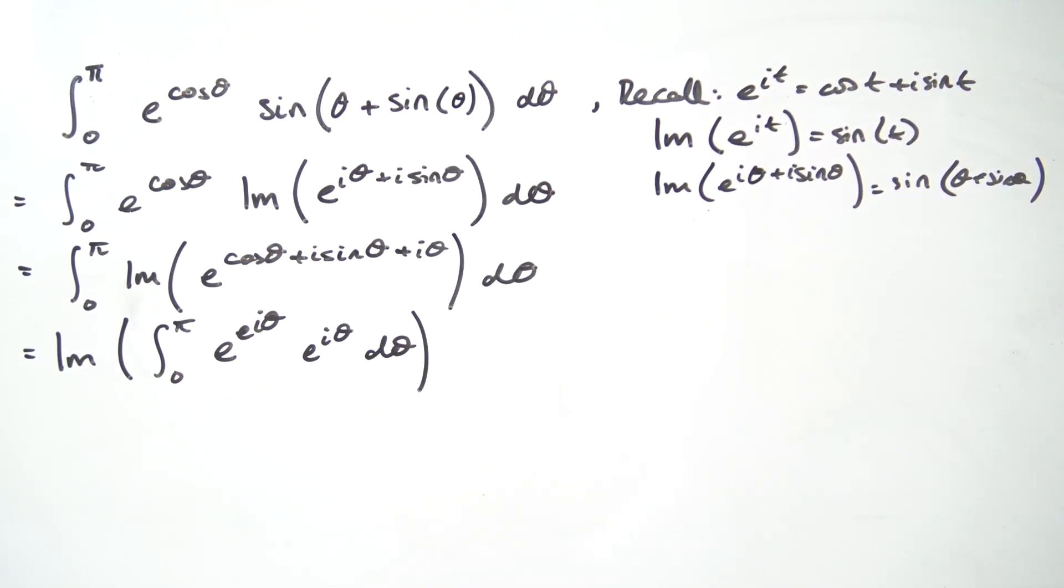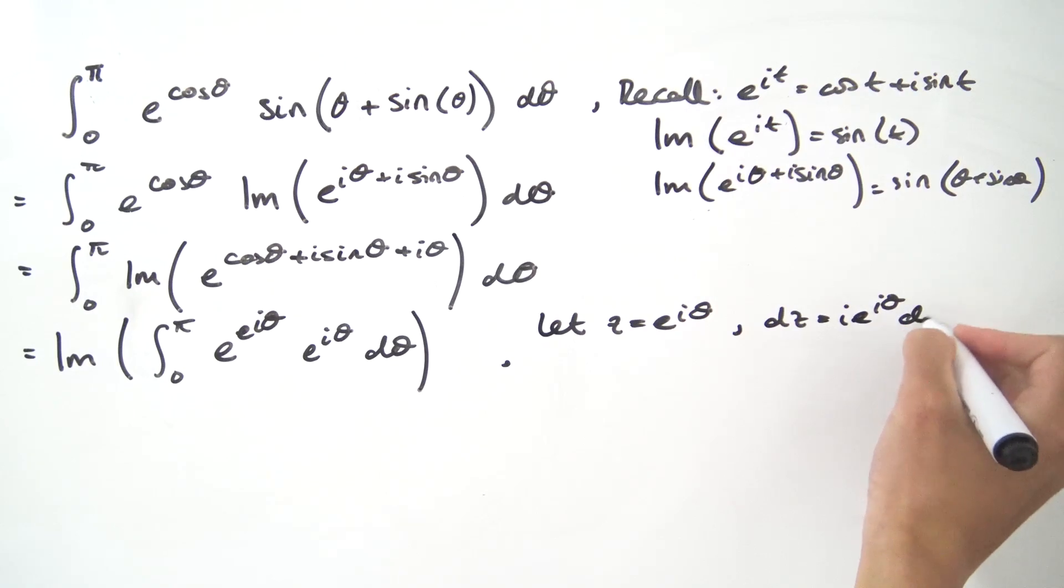This looks a bit more promising than what we had initially because this e to the i theta is actually the derivative of the inside of this exponential function. So what we can do is, for example, let z be equal to e to the i theta. Then what are we going to get for dz? That is going to be i e to the i theta d theta.